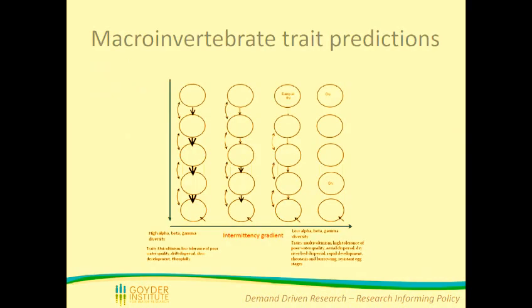This is also a look at how we think intermittency will affect macroinvertebrates and their traits. In a highly connected stream where you've got pools connected throughout the river system, we would predict higher alpha, beta and gamma diversity — the diversity within each individual pool and also across all the different pools. We would predict that as these systems get drier, we would see lower diversity and differences in the traits that these species possess.